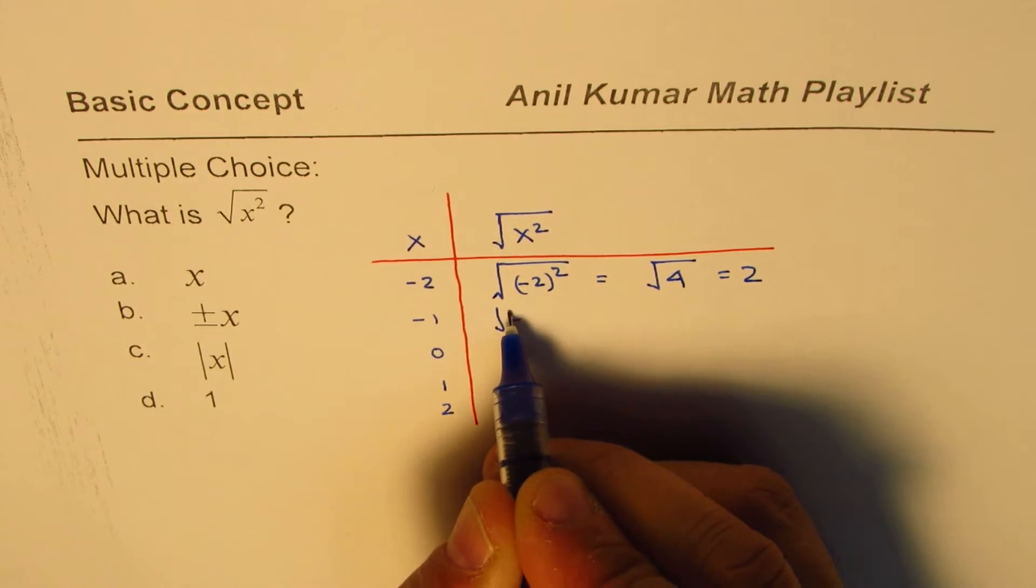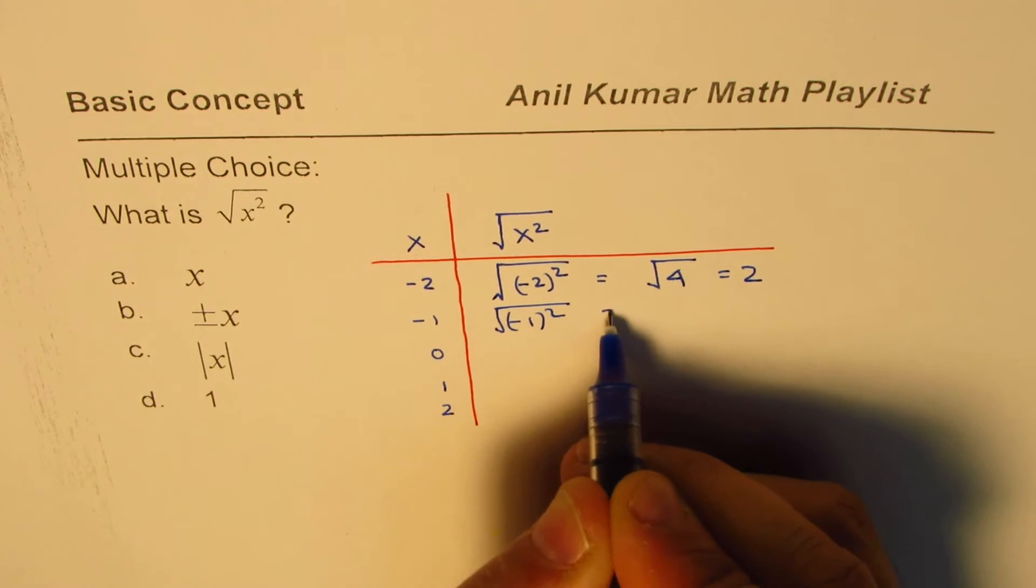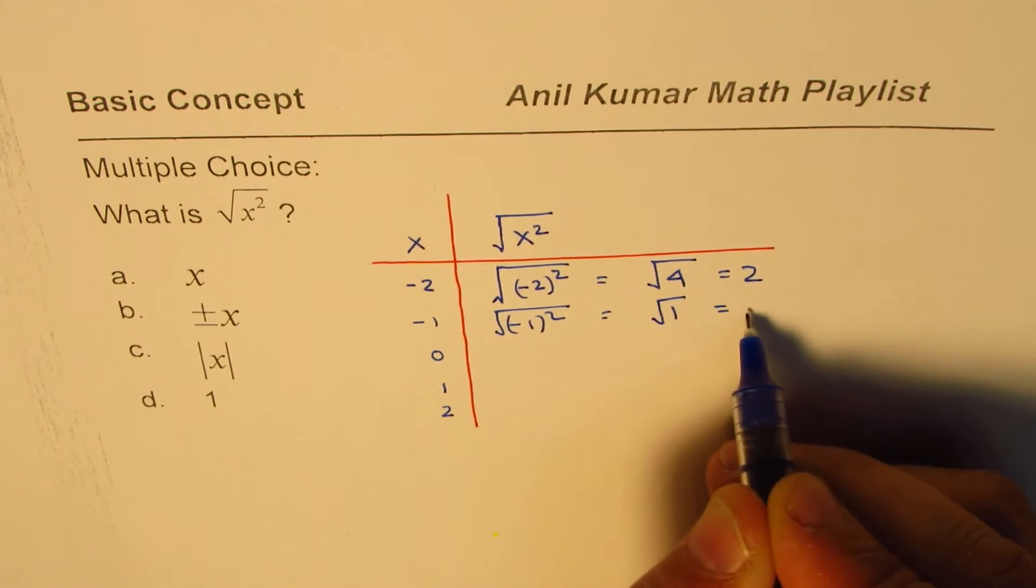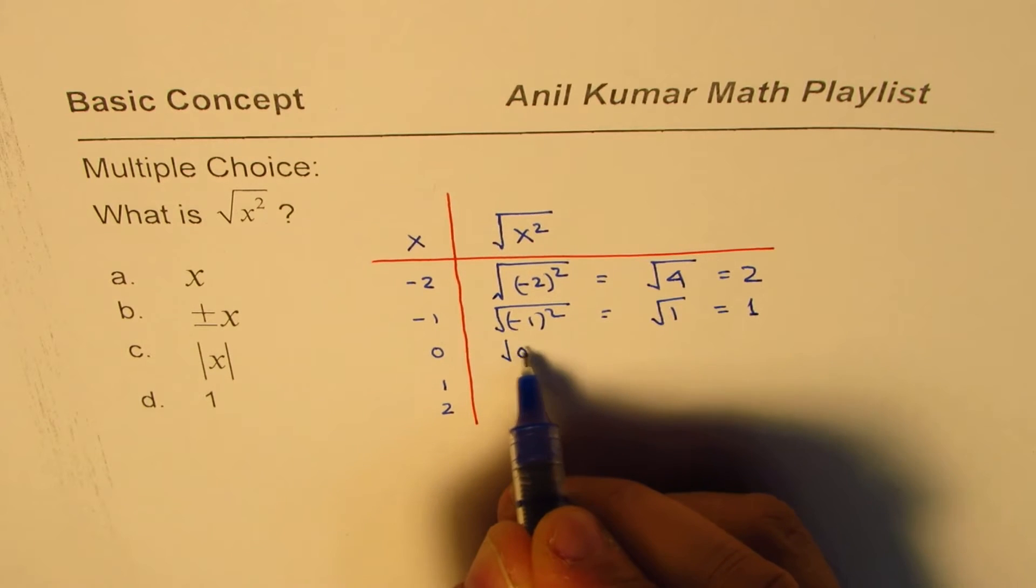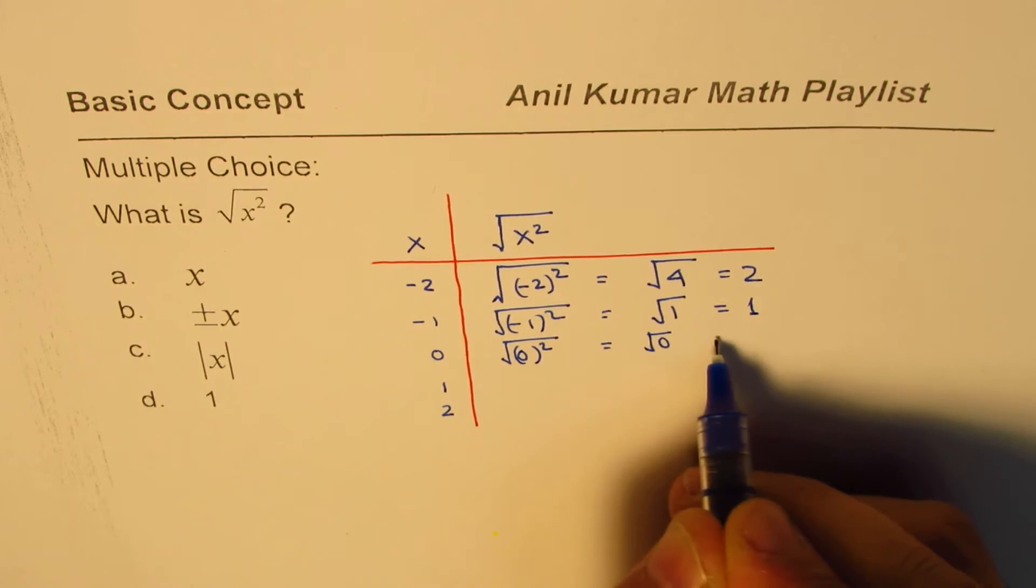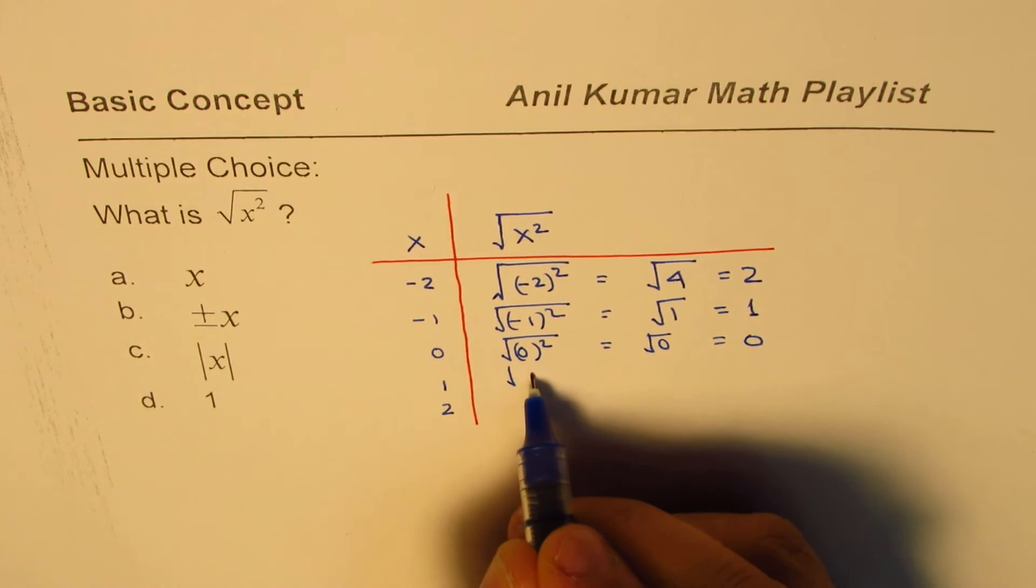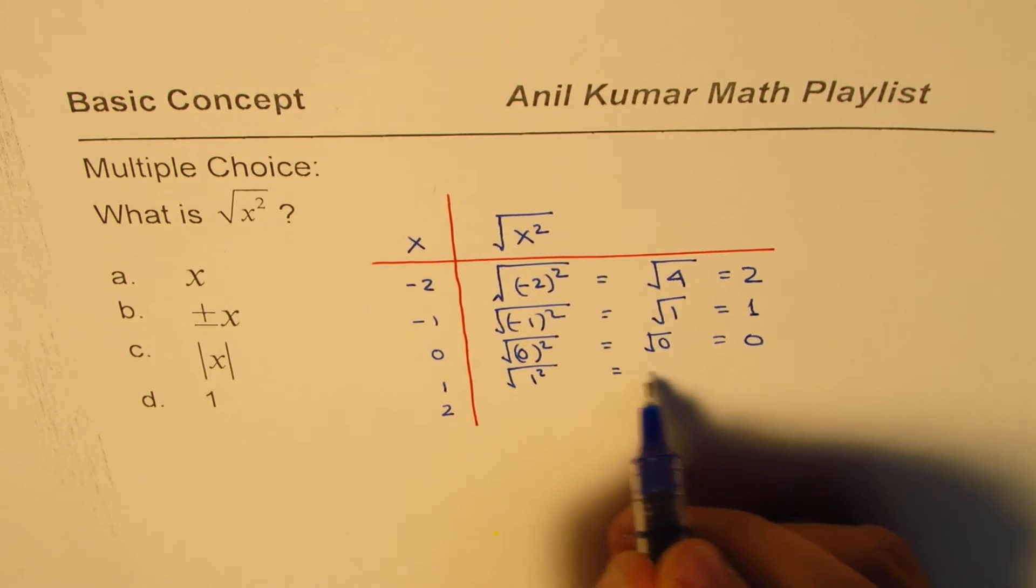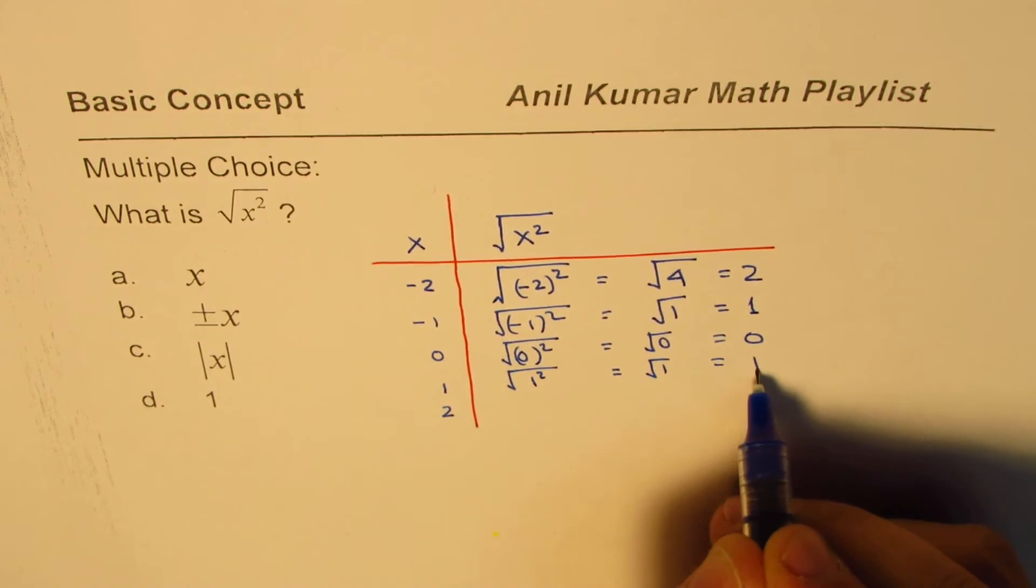Square root of minus 1 whole squared is square root of 1, which is 1. Square root of 0 whole squared is square root of 0, which is 0. Square root of 1 squared is square root of 1, which is again 1.